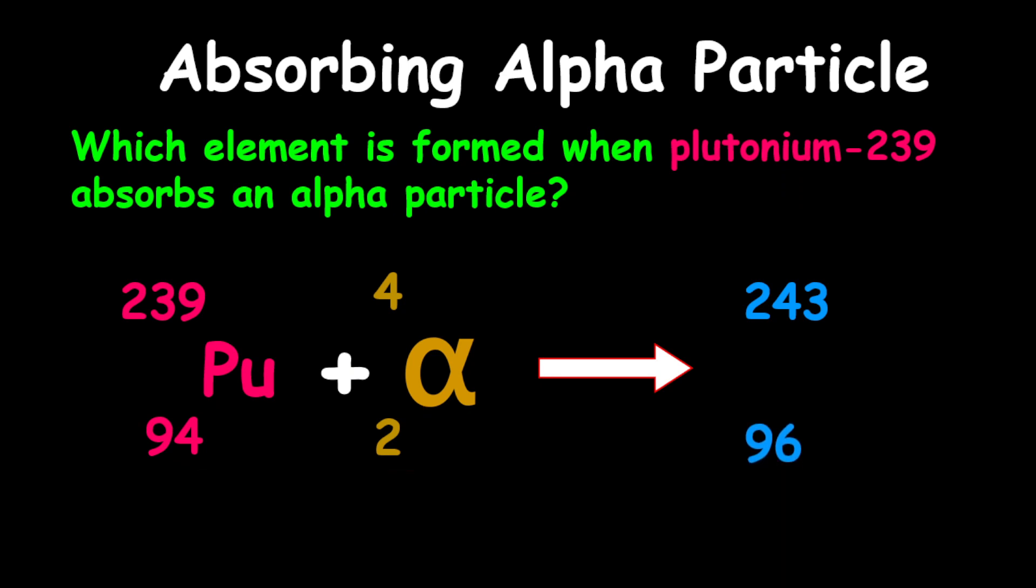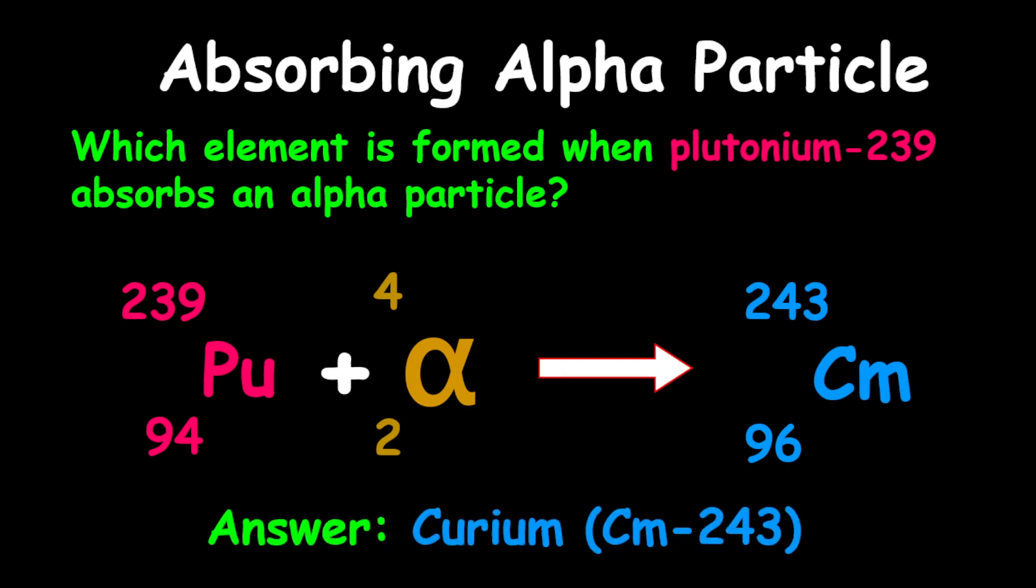By looking at the periodic table, you realize that this element is curium. Therefore, the answer is curium-243.